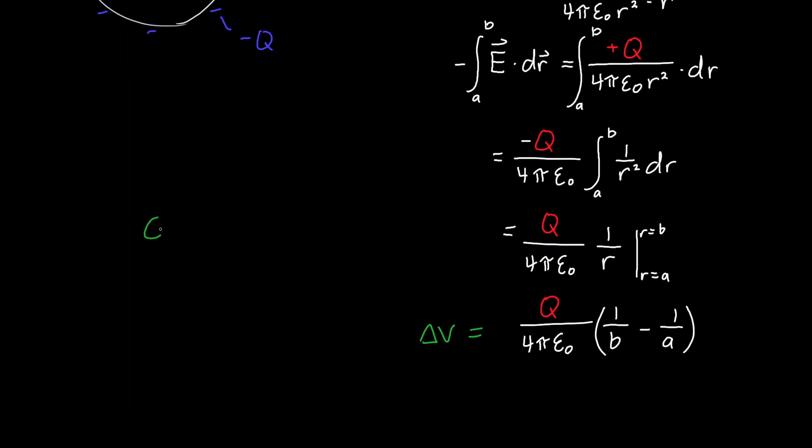To find the capacitance C, all we need to do is divide the charge by delta V and take the absolute value.